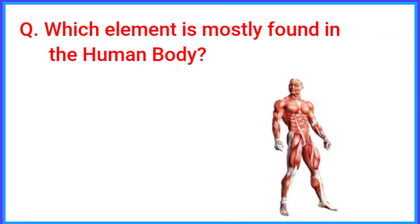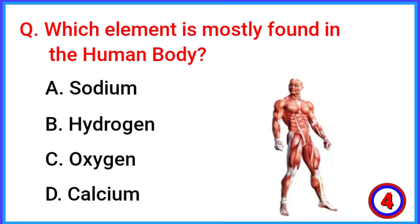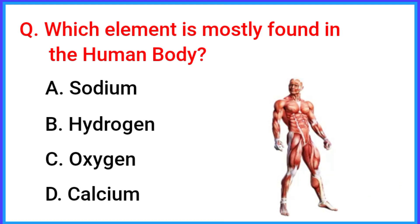Which element is mostly found in the human body? The correct answer is option C: oxygen.